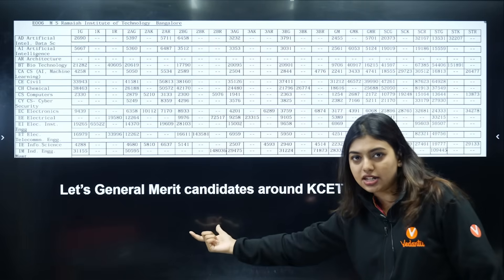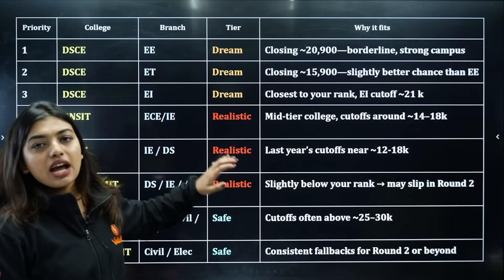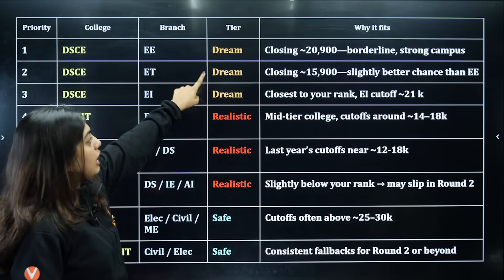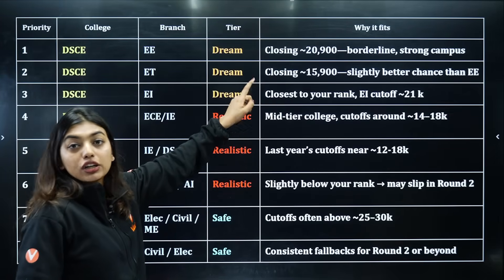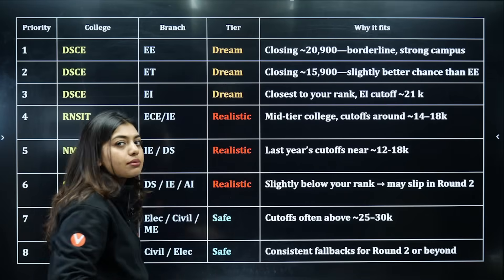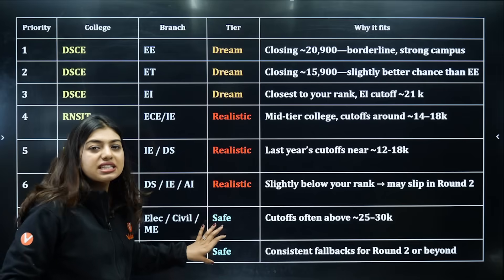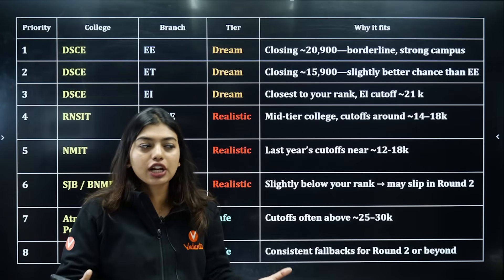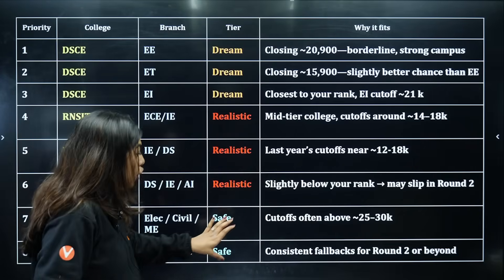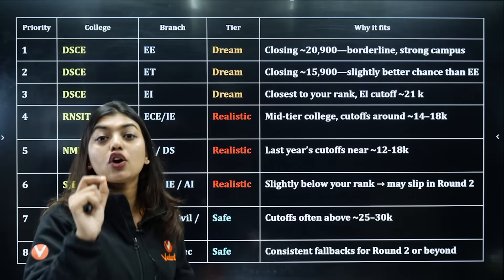Let's consider a general merit student with 20,000 rank. Looking at the priority list: DSCE, Electrical Engineering — borderline, slight chance. The first three choices are dream colleges — top colleges — and then realistic ones with high chance. There are safe options too. This is how you should check and set your choice locking: first set your dream colleges, then go to the realistic ones.